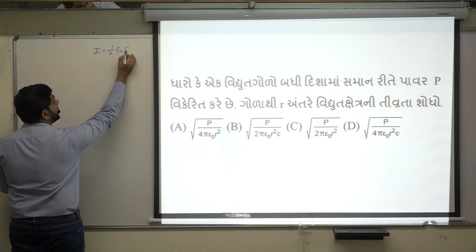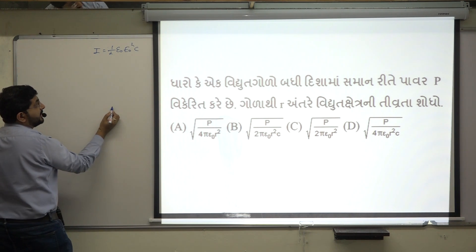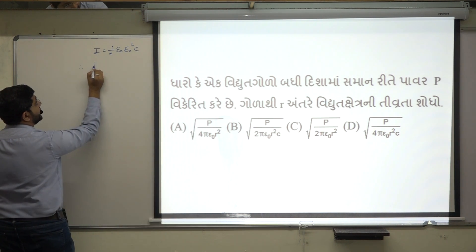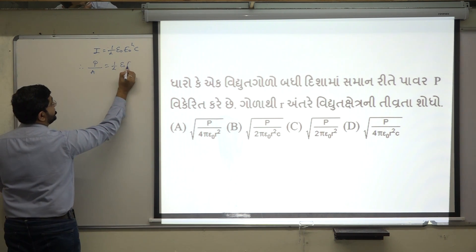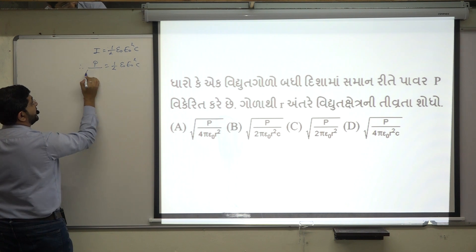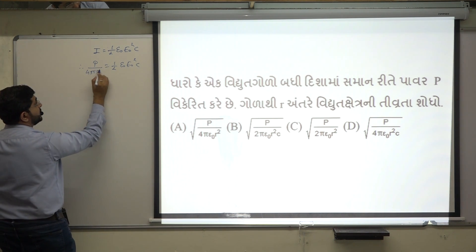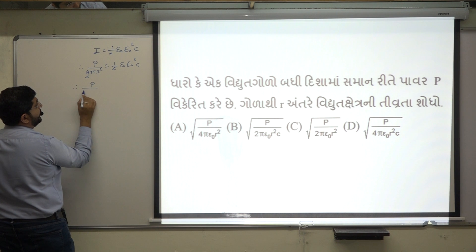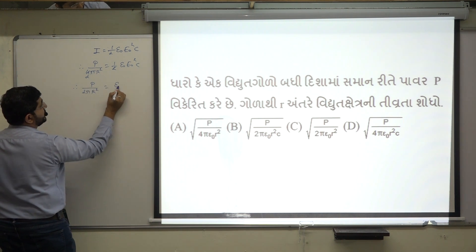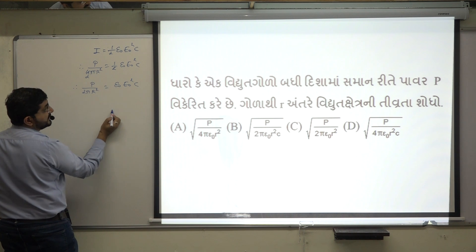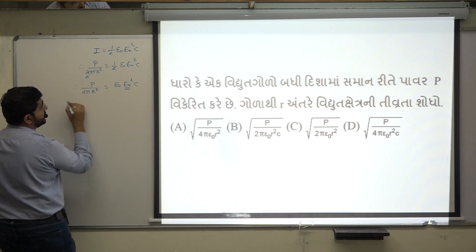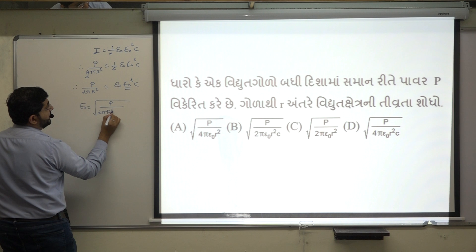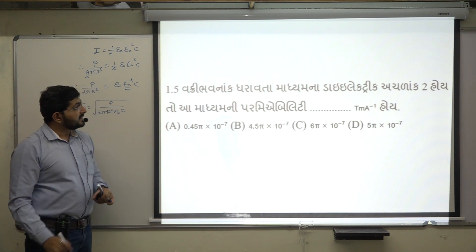Intensity I = ½ε₀E₀²c. And according to the intensity format, we write the field intensity I = ½ε₀E₀²c. The intensity equals power P divided by area 4πr², so 4πr² terms cancel. Therefore P upon 2πr² = ε₀E₀²c, giving E₀. So P/(2πr²ε₀c) is your correct answer. Next question.